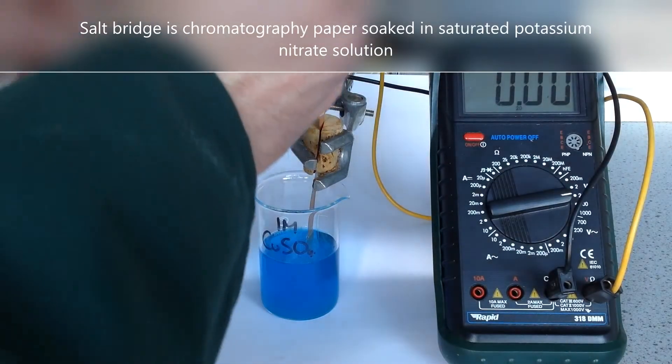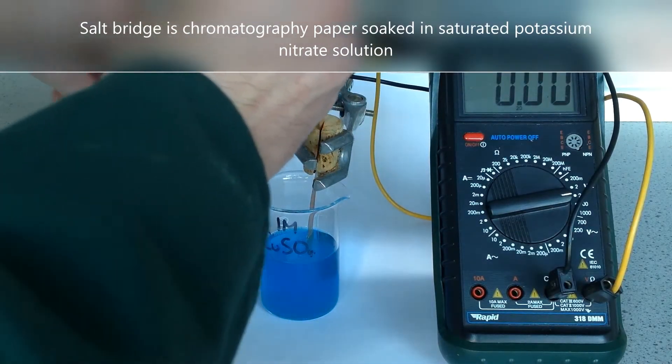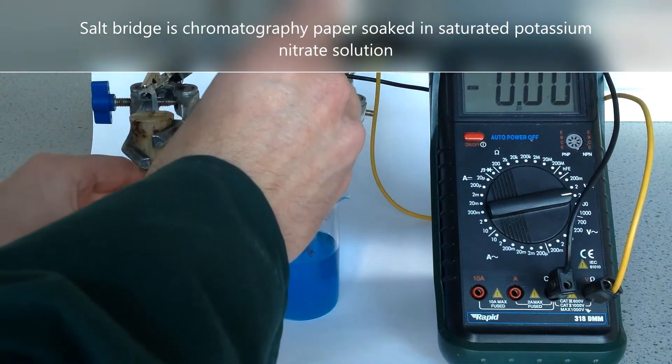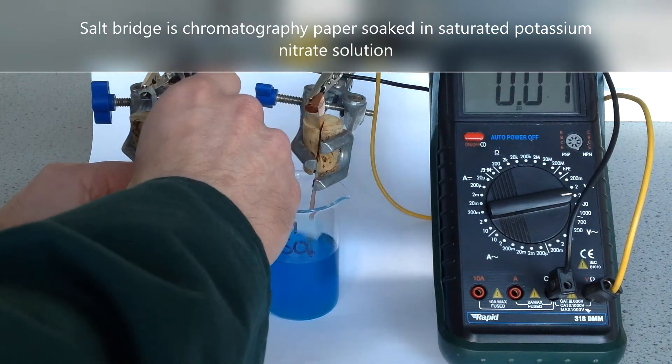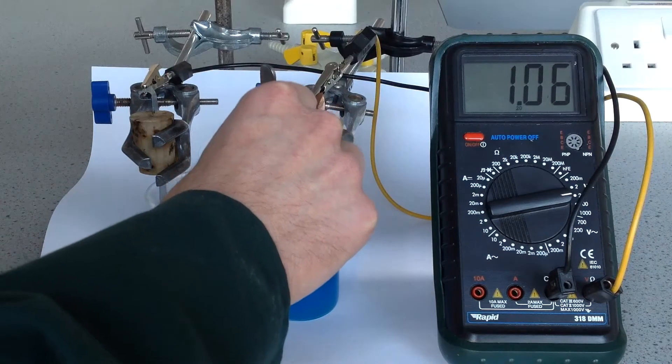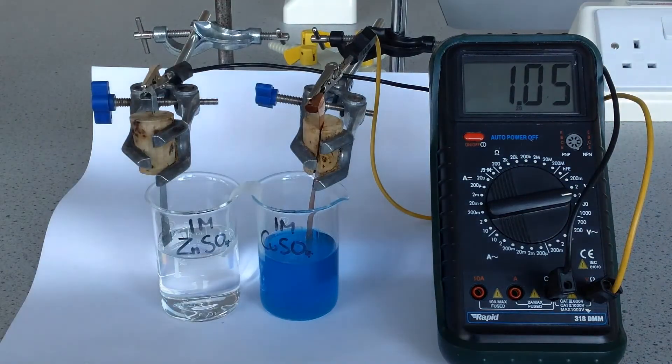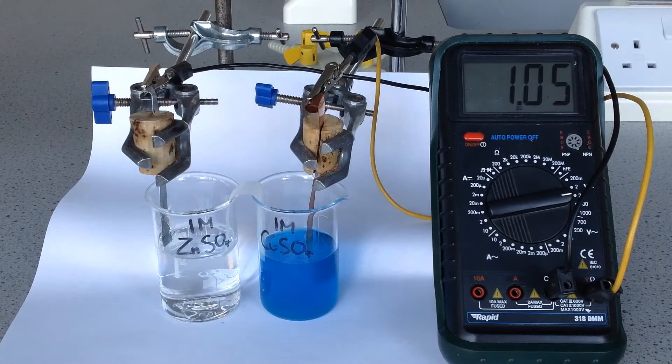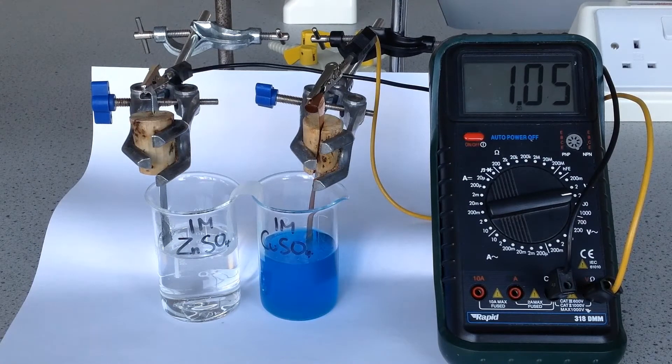When we add our salt bridge across, it's a bit fiddly when you're doing it, you just need to make sure it's in contact with both solutions. And when we do, we see a reading on the voltmetre of 1.06 or 1.05 volts in this case.